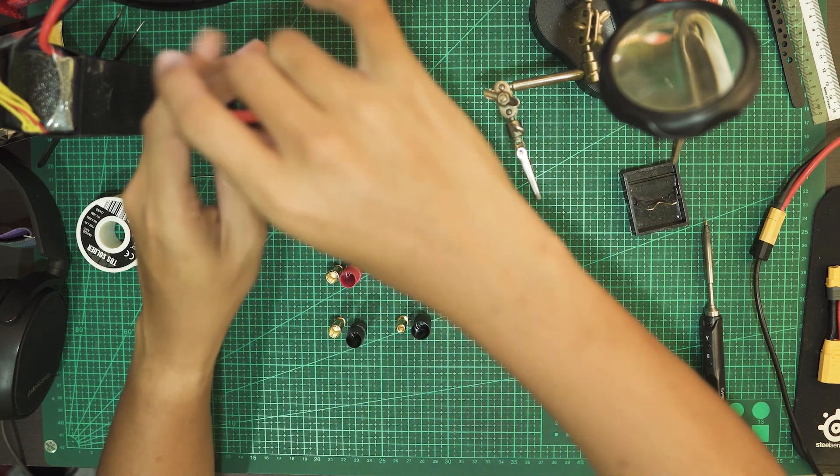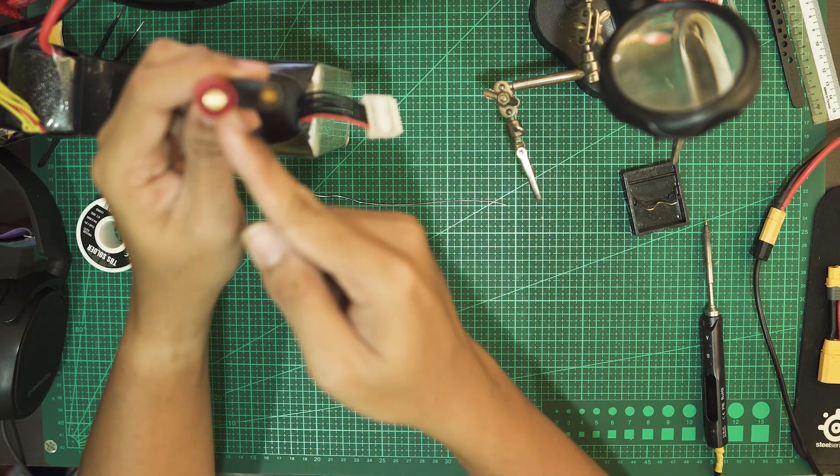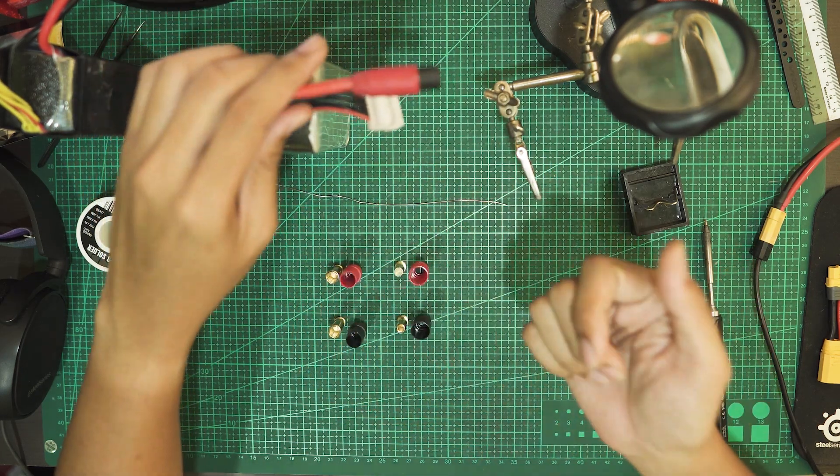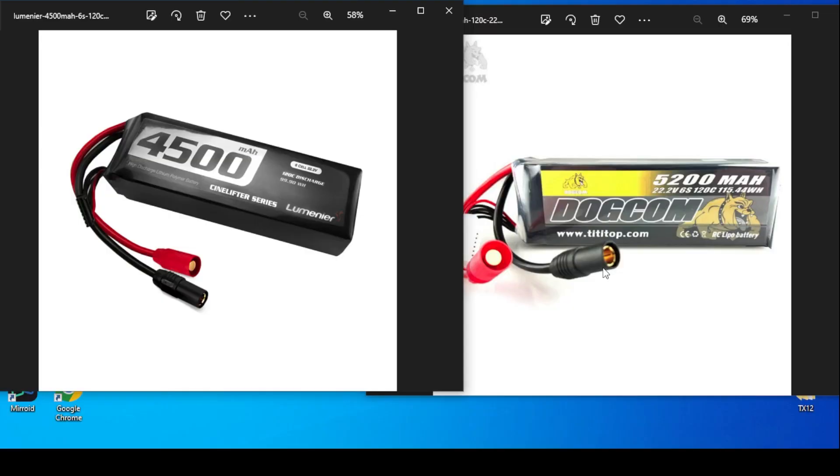And now it's time for me to decide which ends go on the battery lead and which ends go onto the ESC. And these are just photos of some cine-lifter batteries I saw online. And let's just take this as standard.